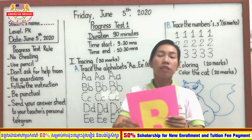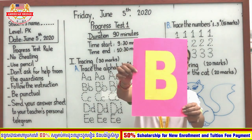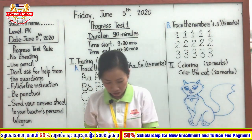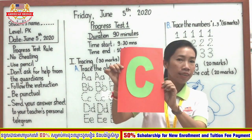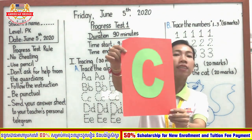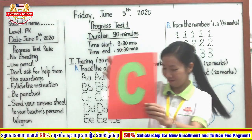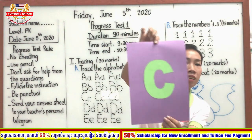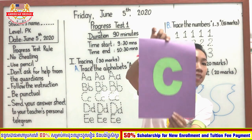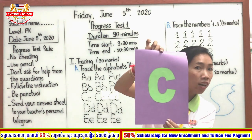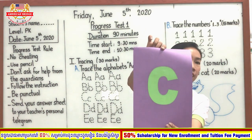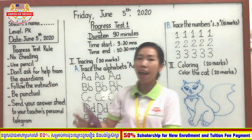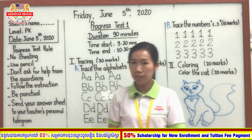What letter? Yes, capital B. One more, look at here — what letter? Yes, capital C, good. What letter? Small letter C or capital letter C? Yes, small letter C. Who can tell teacher — C for? Yes, C for cat. The word cat begins with the letter C.